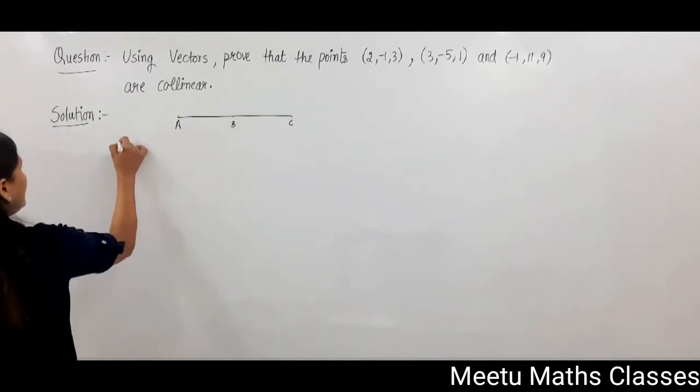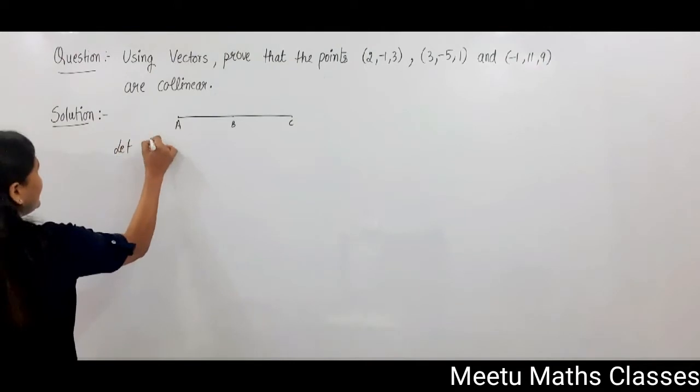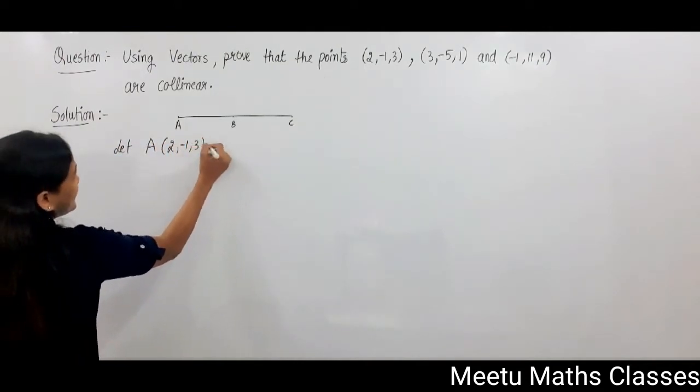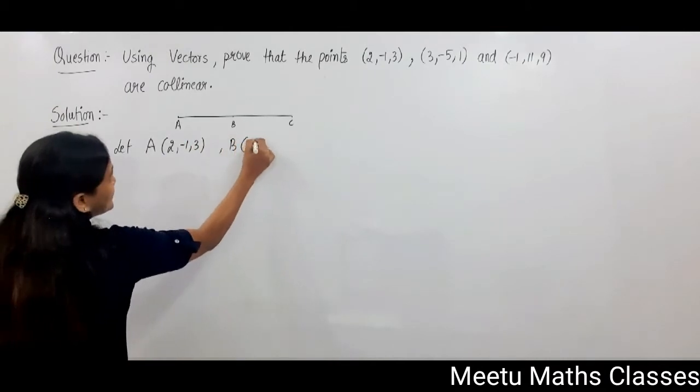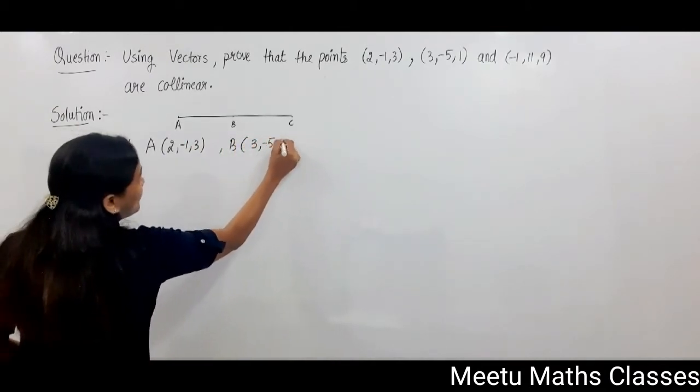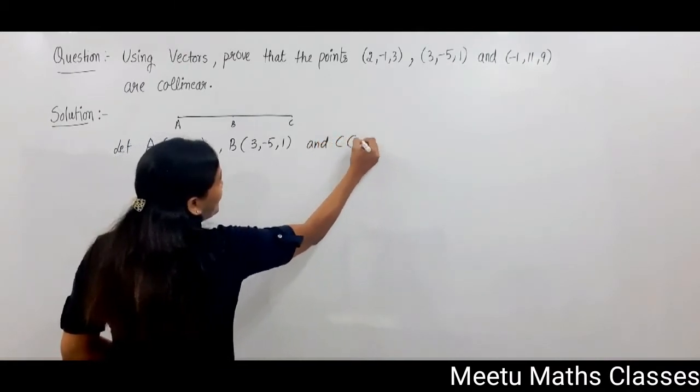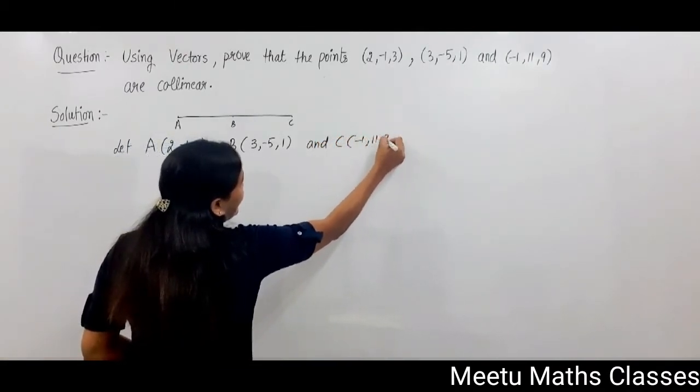So let us start with, let A is this point (2, -1, 3), B is this point (3, -5, 1) and C is (-1, 11, 9).